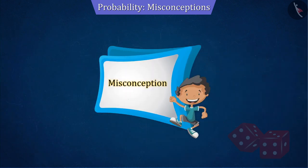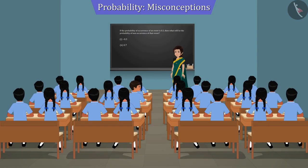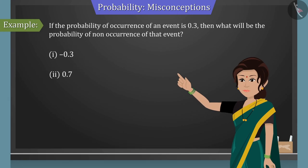Let us discuss a misconception. A teacher asks this question in class. If the probability of occurrence of an event is 0.3, then what will be the probability of non-occurrence of that event?